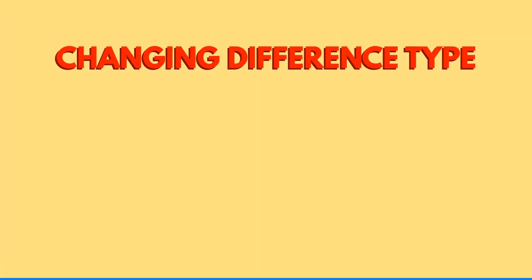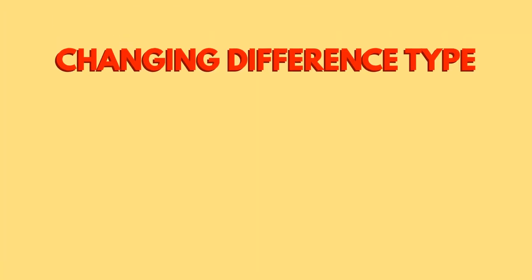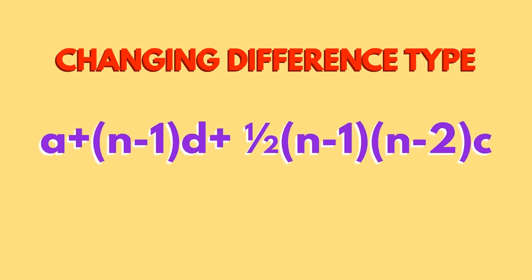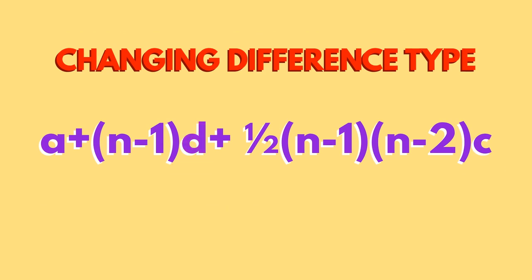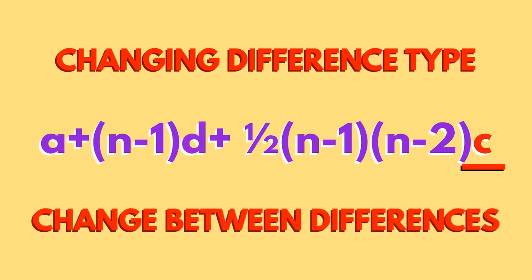The changing difference type is more complicated. The formula is shown here. A is the first term. D is the first difference, the difference between the first two numbers. C is the change between one difference and the next.